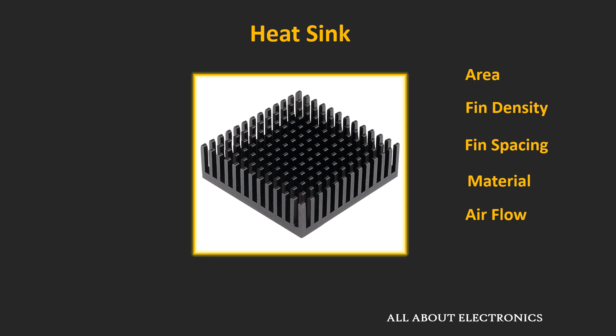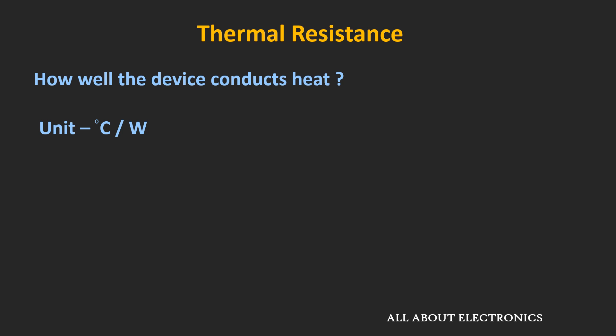For any heat sink, how well it transfers heat is defined using thermal resistance, which is measured in units of degrees centigrade per watt or degrees kelvin per watt. This tells us the rise in temperature of a device when 1 watt of power is applied. The thermal resistance of any heat sink should be as low as possible. For example, if a heat sink has a thermal resistance of 5°C per watt and absorbs 5 watts of power, the heat sink temperature will rise by 25°C. If the ambient temperature is 25°C, the heat sink will be at 50°C.